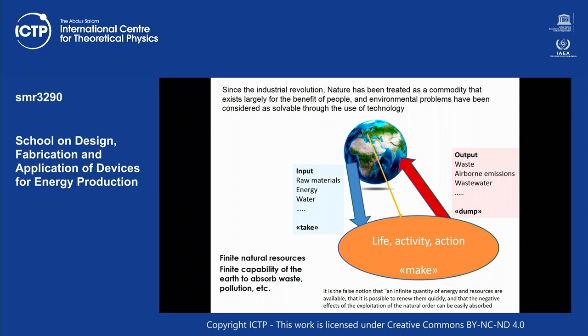Paul Crutzen defined the Anthropocene starting from the first industrial revolution, during the 19th century, when strong human activity and strong footprint began. Since the industrial revolution, nature has been treated as a commodity that exists largely for the benefit of people, and environmental problems have been considered as solvable through technology. But it is a false idea that thanks to technology we are able to solve any kind of problem.